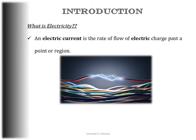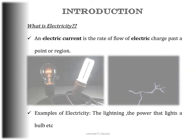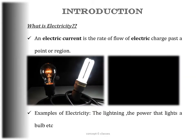First, let's see what is electric current. Electric current is a rate of flow of electric charge past a point or a region. In simple words, electric current is a flow of charge. Charge is usually carried by free-flowing electrons, so we can say that electric current is the flow of electrons in any material.